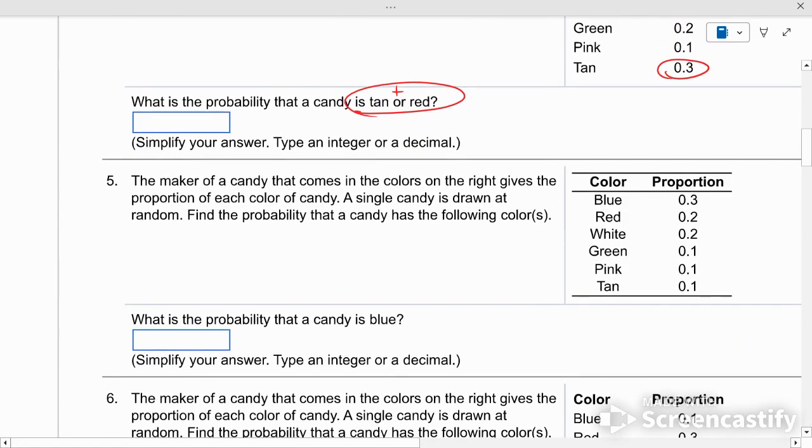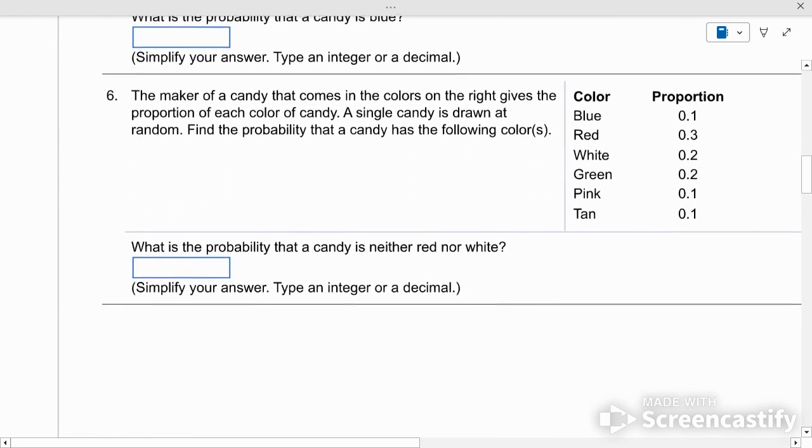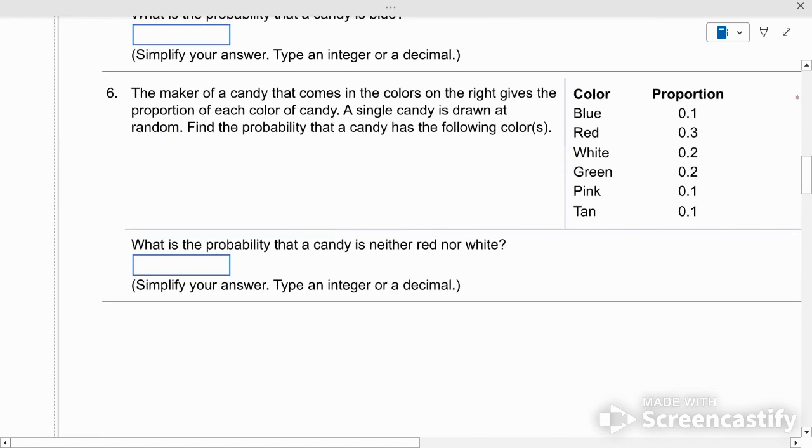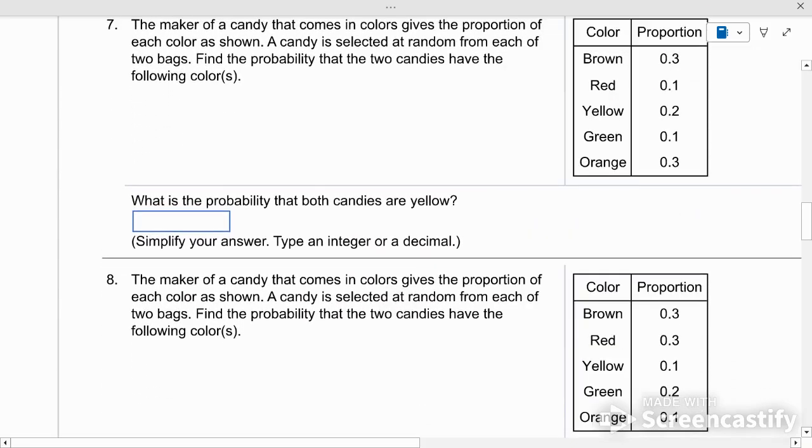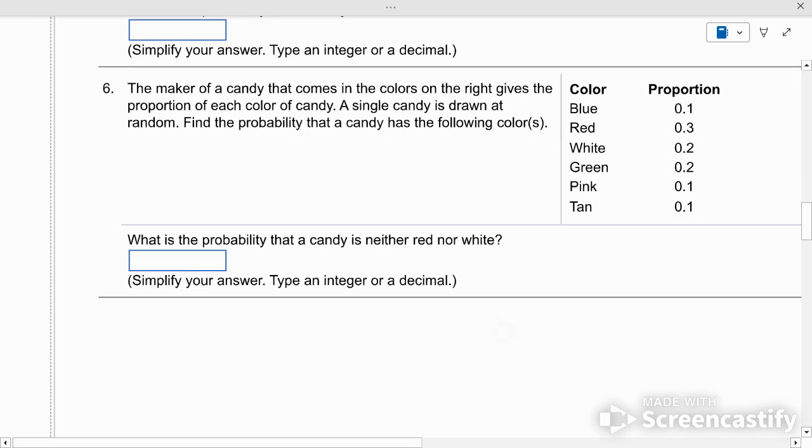The maker of candy, what's the probability that it's blue? 0.3. And so on. Red. Neither red nor white. So you find red and white, which is 50%. So not red and white would be the other 50%.